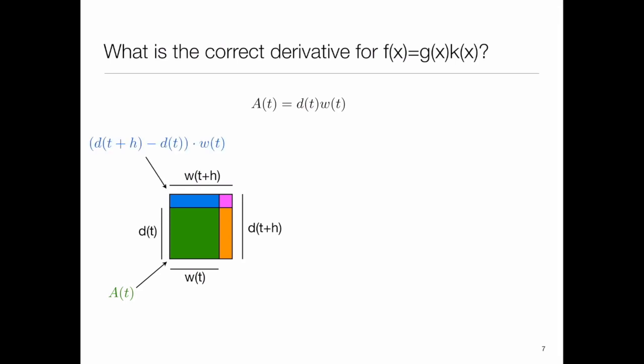That's where we start off with. Then we have another area here, the blue rectangle, and that one has dimensions along this edge of d of t plus h minus d of t, because d of t plus h is this whole height here, and we subtract off this height. We're left with this little bit here, which is that difference. The width goes all the way from here to here, which is w of t. So I get the product of d of t plus h minus d of t multiplied by w of t.